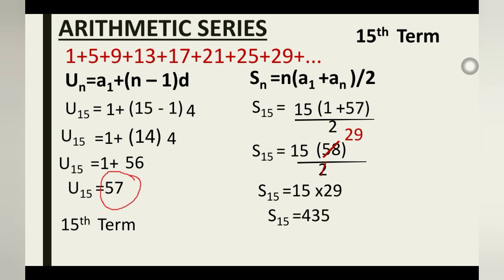With this formula you can find the sum of the first n terms of any arithmetic series. For the sum of the first 100 terms, you first find the 100th term using a_n = a_1 + (n − 1) × d, then substitute that value into the sum formula S_n = n × (a_1 + a_n) / 2, and you're done.